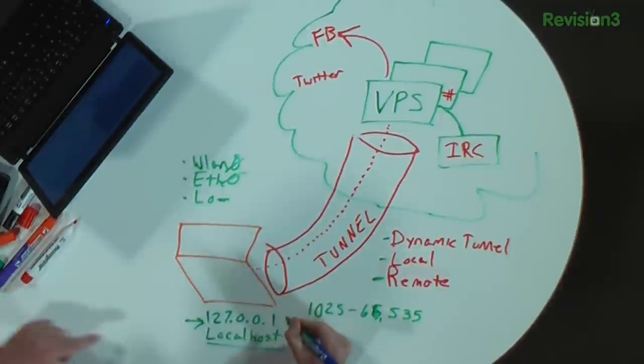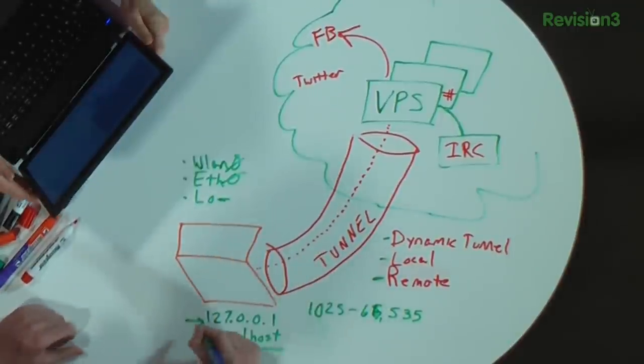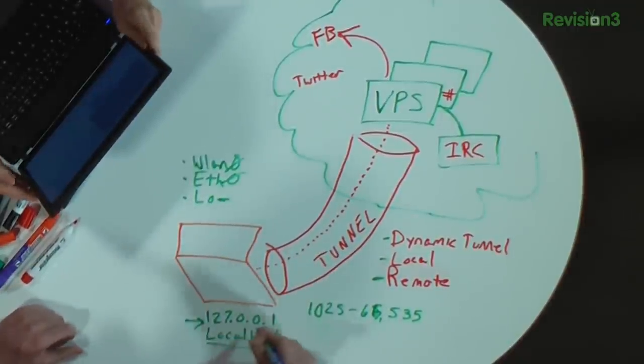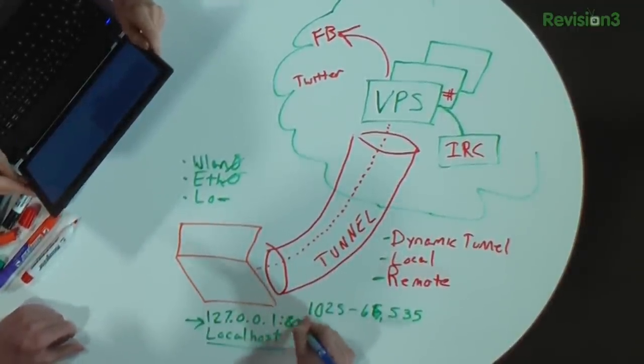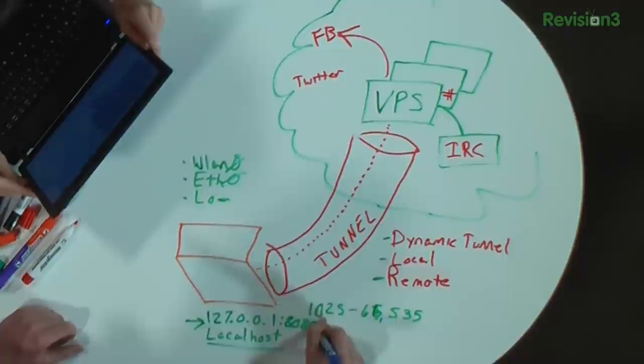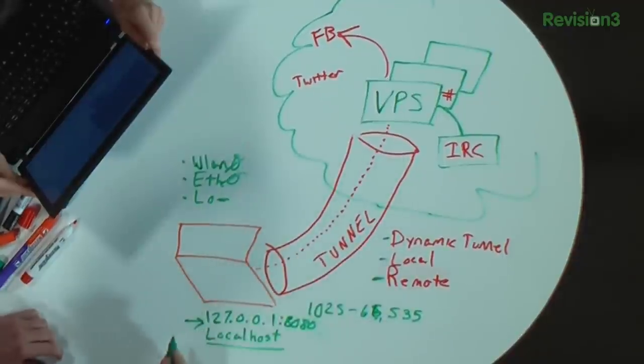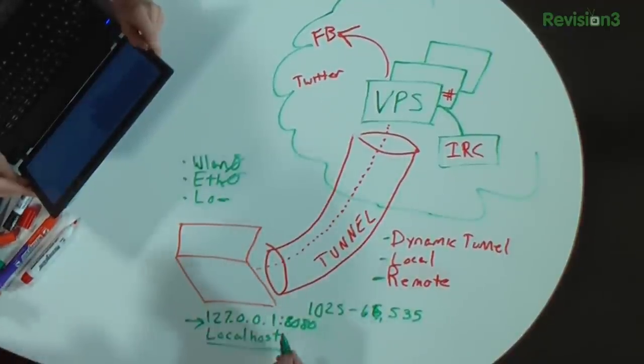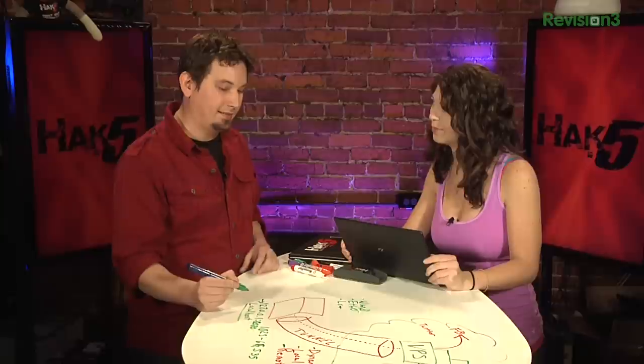When you're creating this connection at 127.0.0.1 port 8080, what you're making is basically an alias - a route.